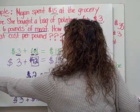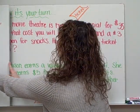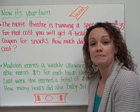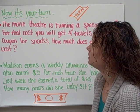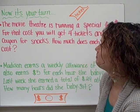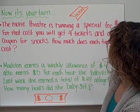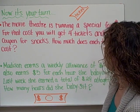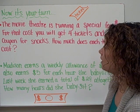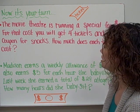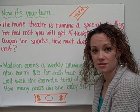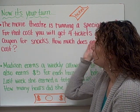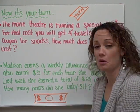Now I'm going to give you your opportunity to do just that. We have 2 practice problems for you to work on in your homework sheet in space number 3. Here's the first one: The movie theater is running a special for $35. For that cost, you get 4 tickets and a $3 coupon for snacks. How much does each ticket cost? Try to come up with an algebraic expression and then solve for the final question.